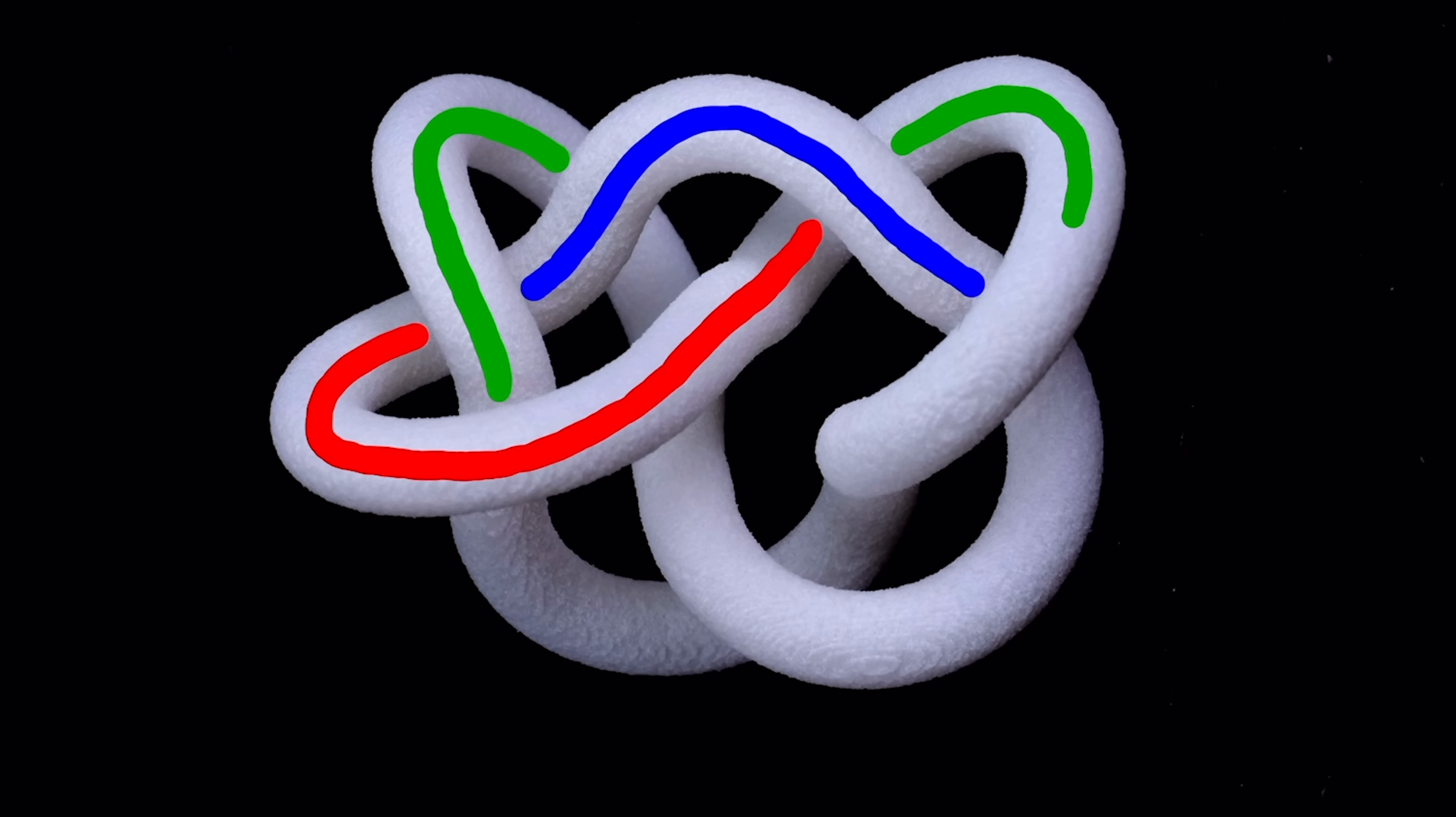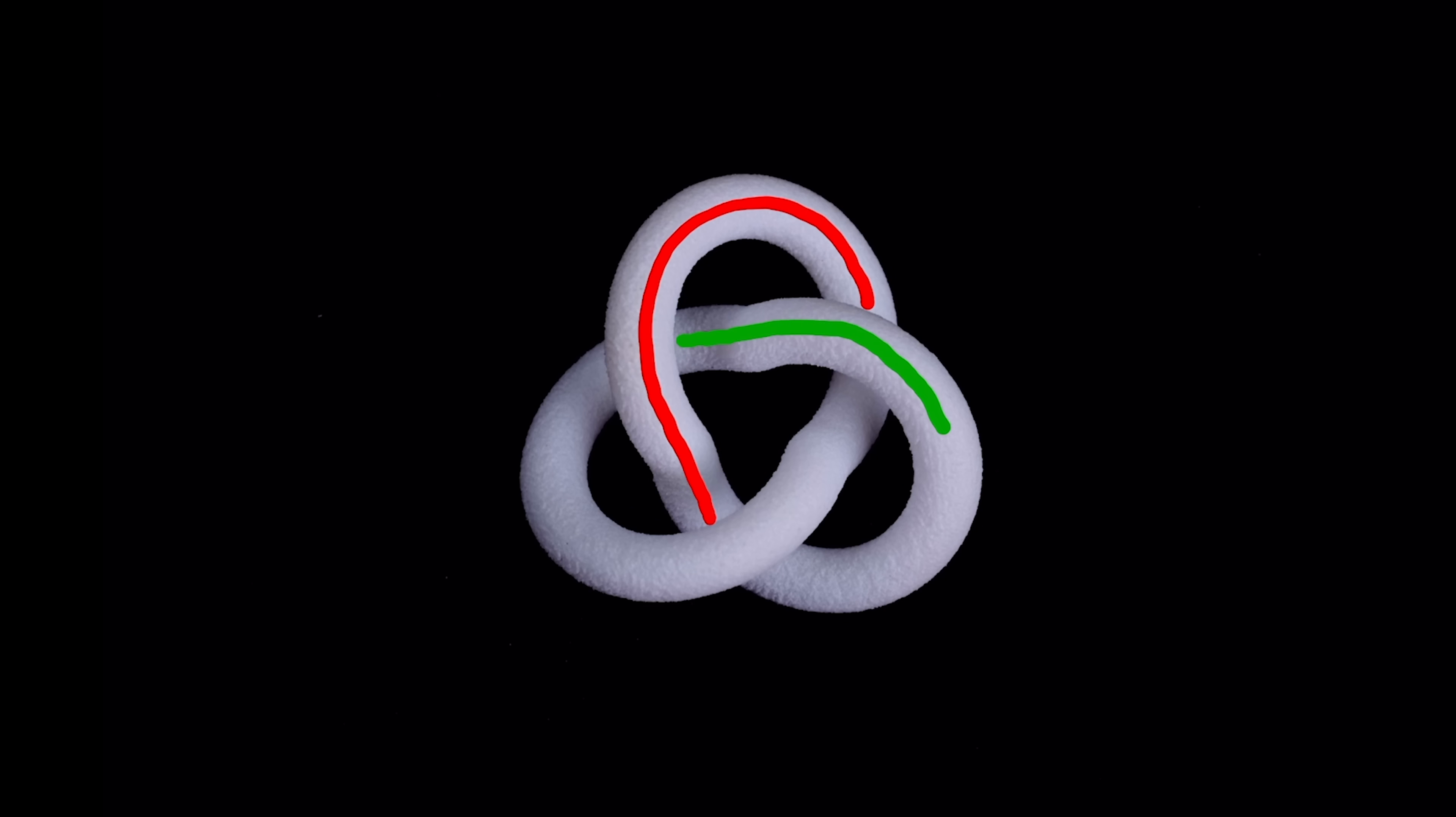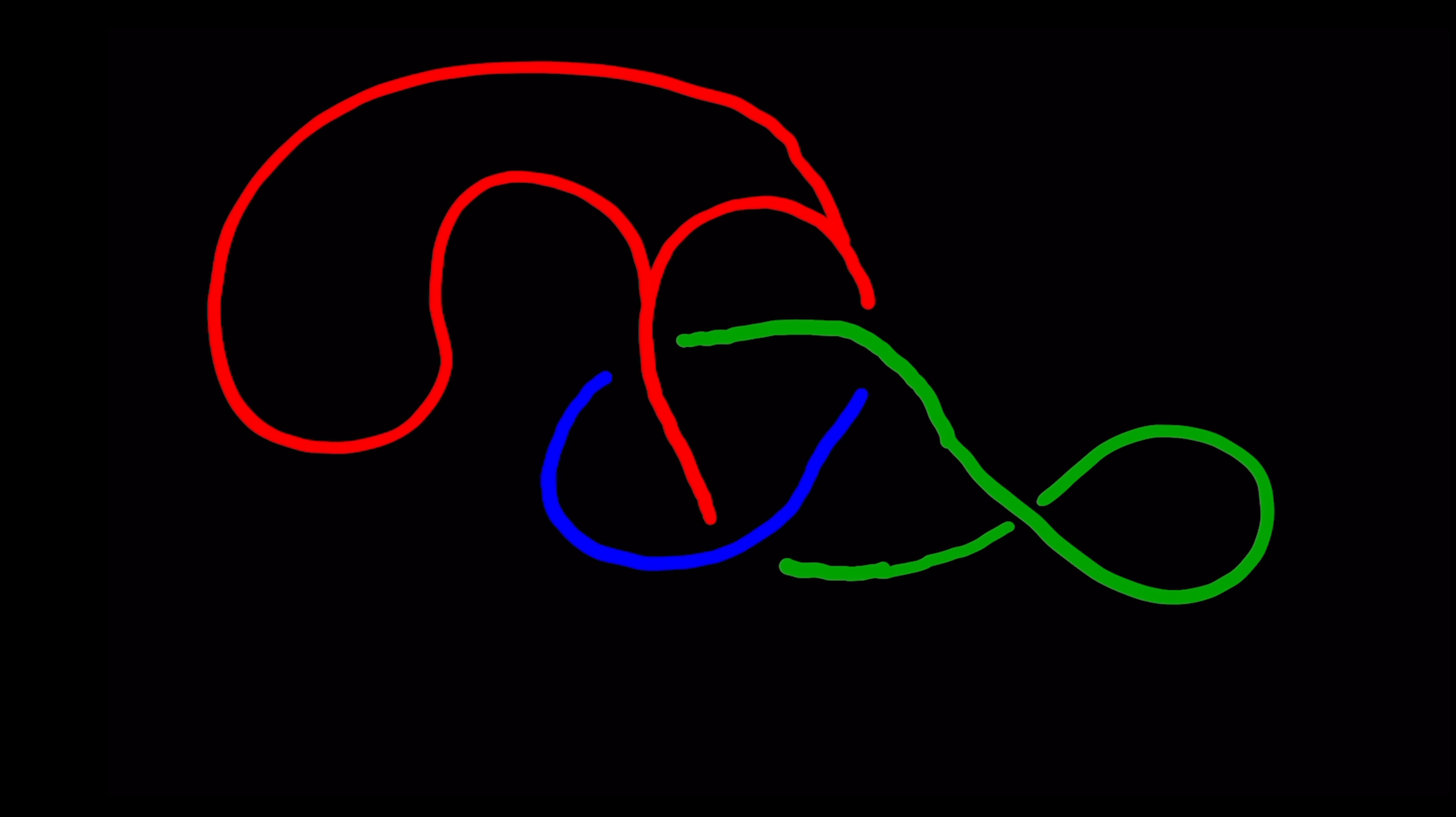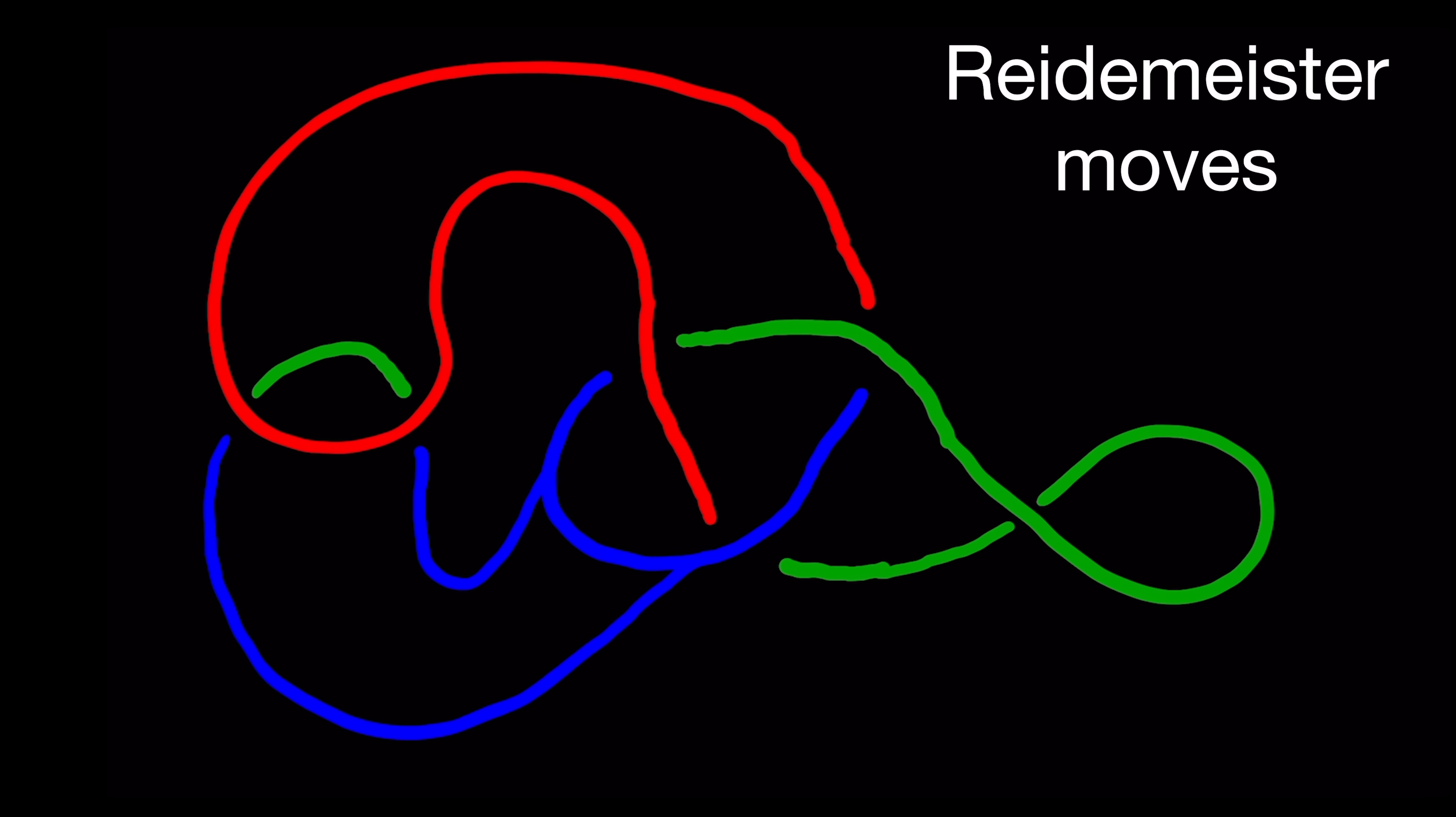A knot is tri-colourable if you can colour the strands of a diagram of the knot in three colours, with the rule that at every crossing you either see all three colours or only one. And of course you're not allowed to use only one colour for the whole diagram, you have to use at least two. This diagram of the trefoil knot is tri-colourable.